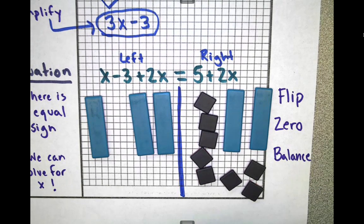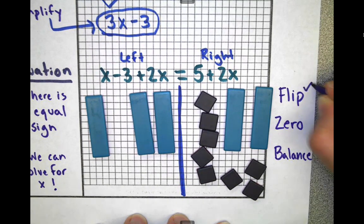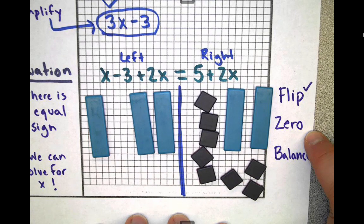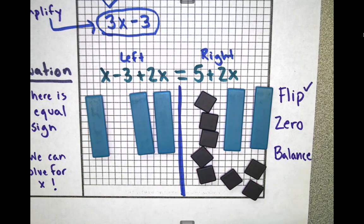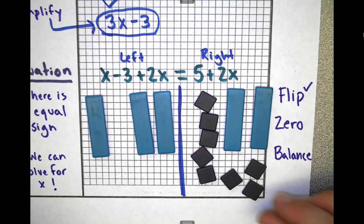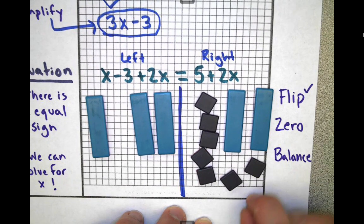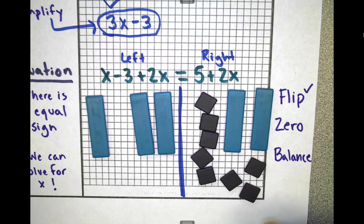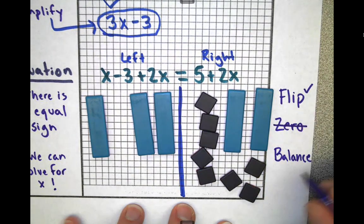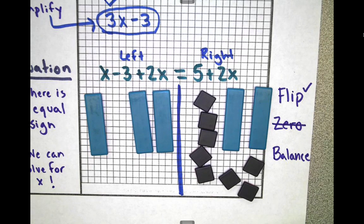Now I get to zero. I get to look for zero pairs. Zero pairs are when you have a negative and a positive together. If I had a red and a blue together, that would be a zero pair. But in this problem, I don't see any zero pairs. Everything is positive right now. So I'm going to cross zero out. It doesn't look like it's working.